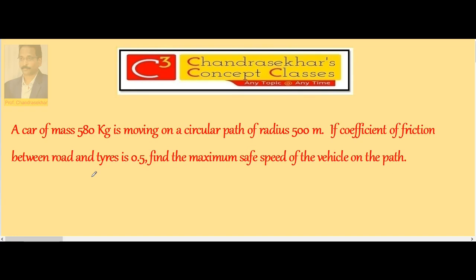A car of mass 580 kg is moving on a circular path of radius 500 meters. If the coefficient of friction between the road and tires is 0.5, find the maximum safe speed of the vehicle on the path. Given: mass of the car is 580 kg, radius of the circular path is 500 meters, and coefficient of friction is 0.5.